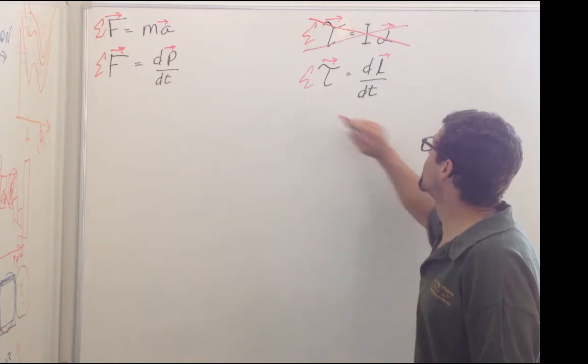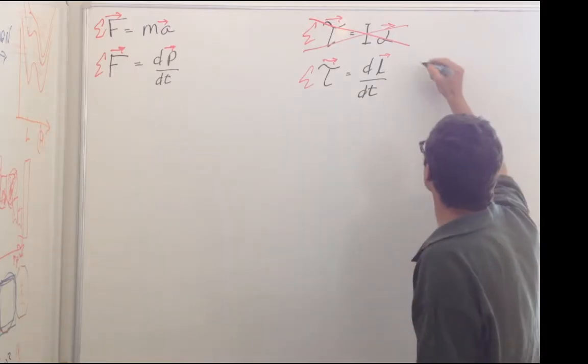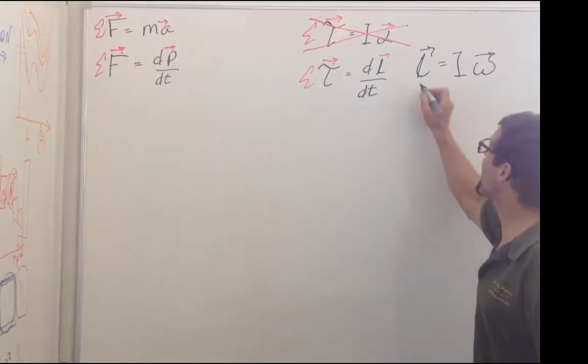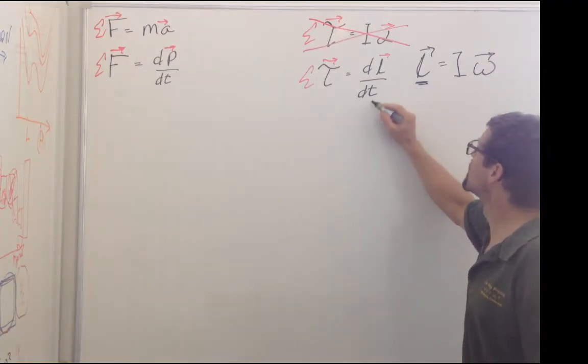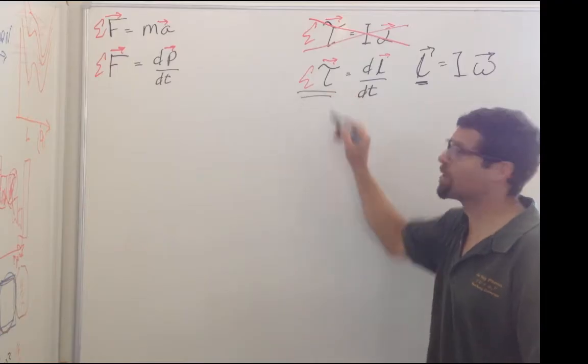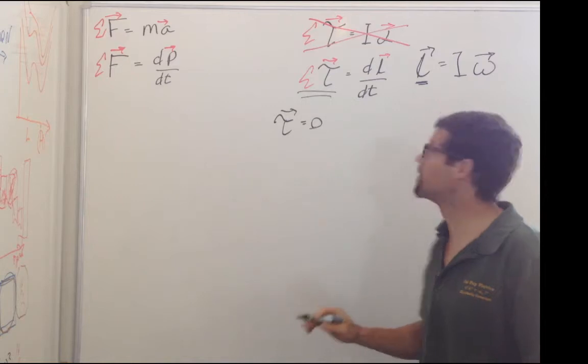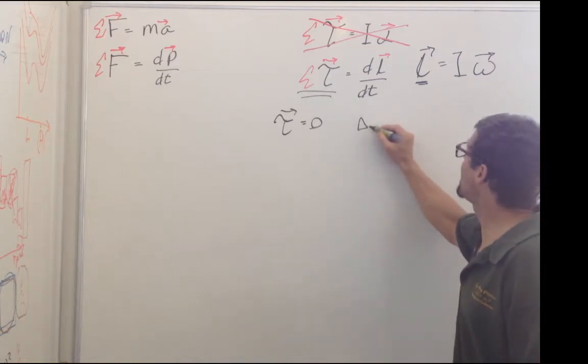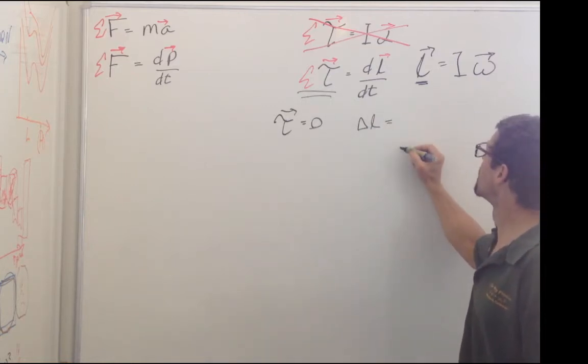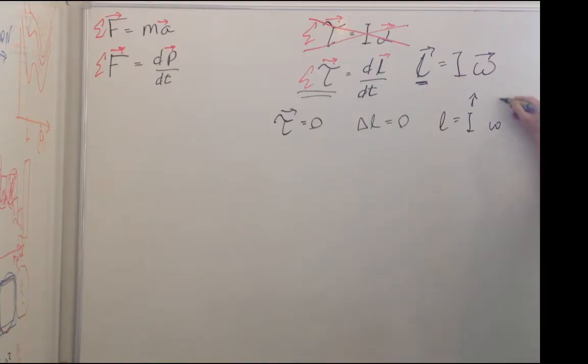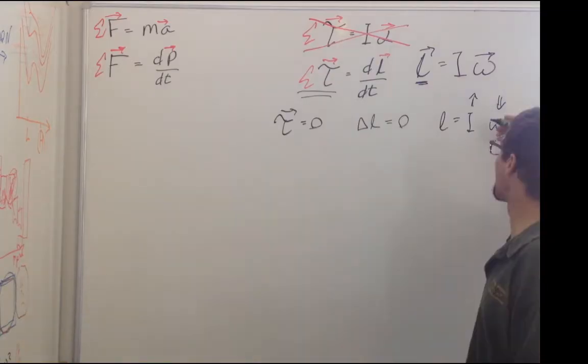It's really best to just keep angular momentum is equal to I times omega. And the rate of change of L is equal to the sum of the torques. So if torque is equal to zero on a system, then the change in momentum must be zero. And therefore, if I increases, then omega must decrease. And if I decreases, omega must increase.